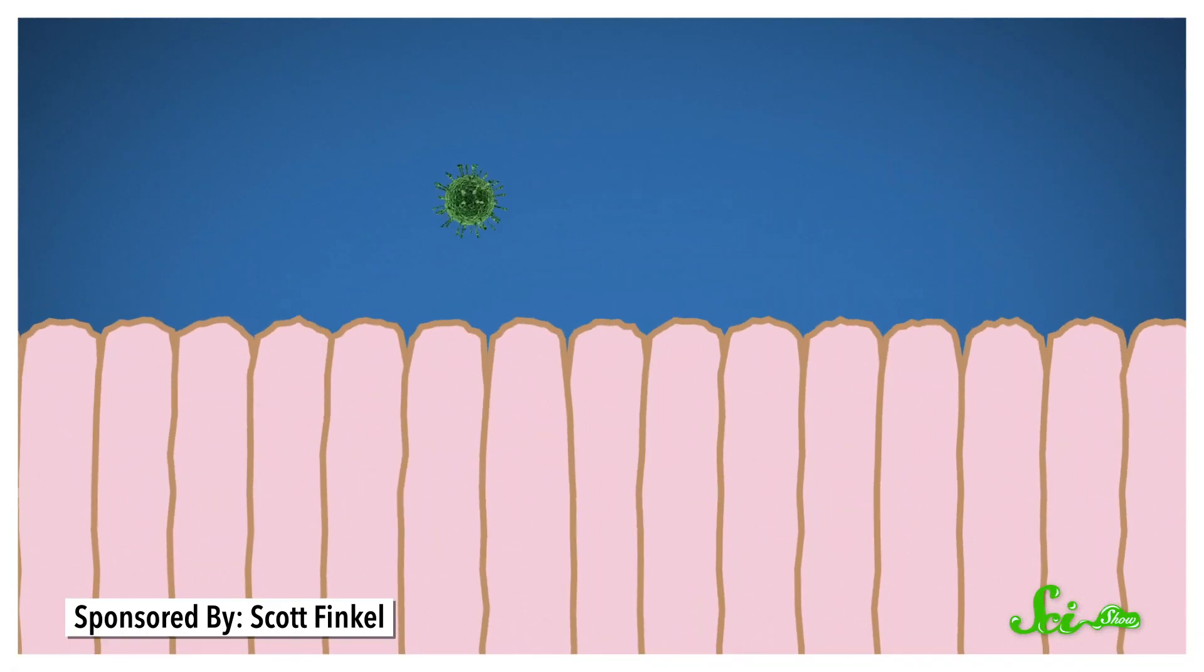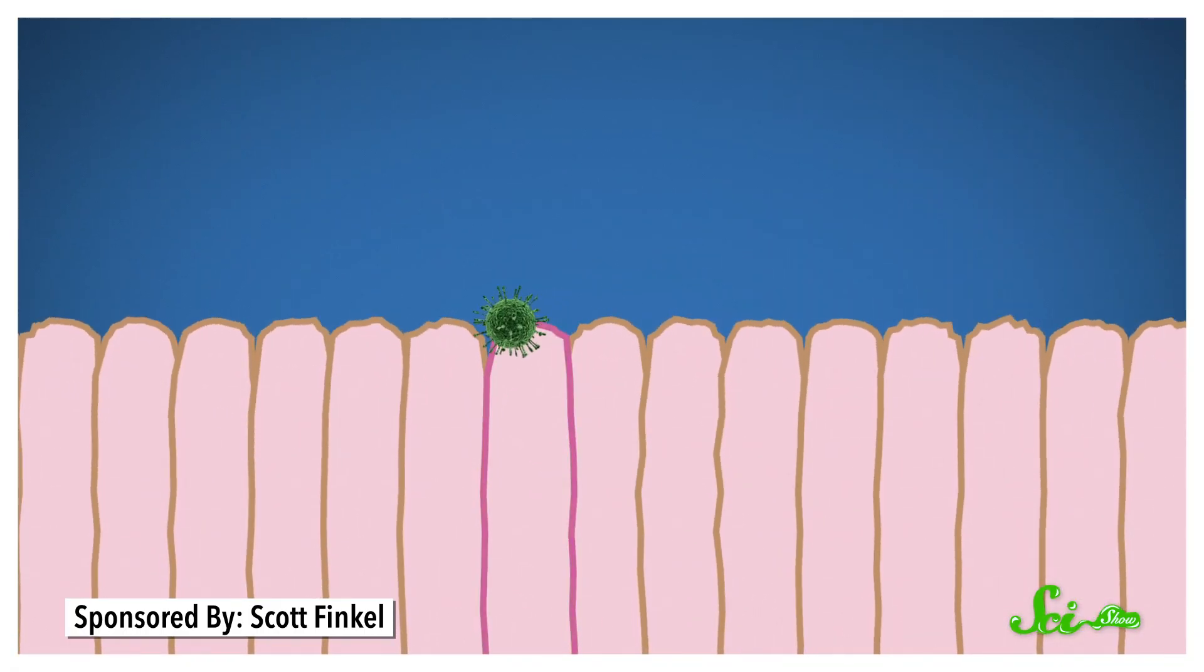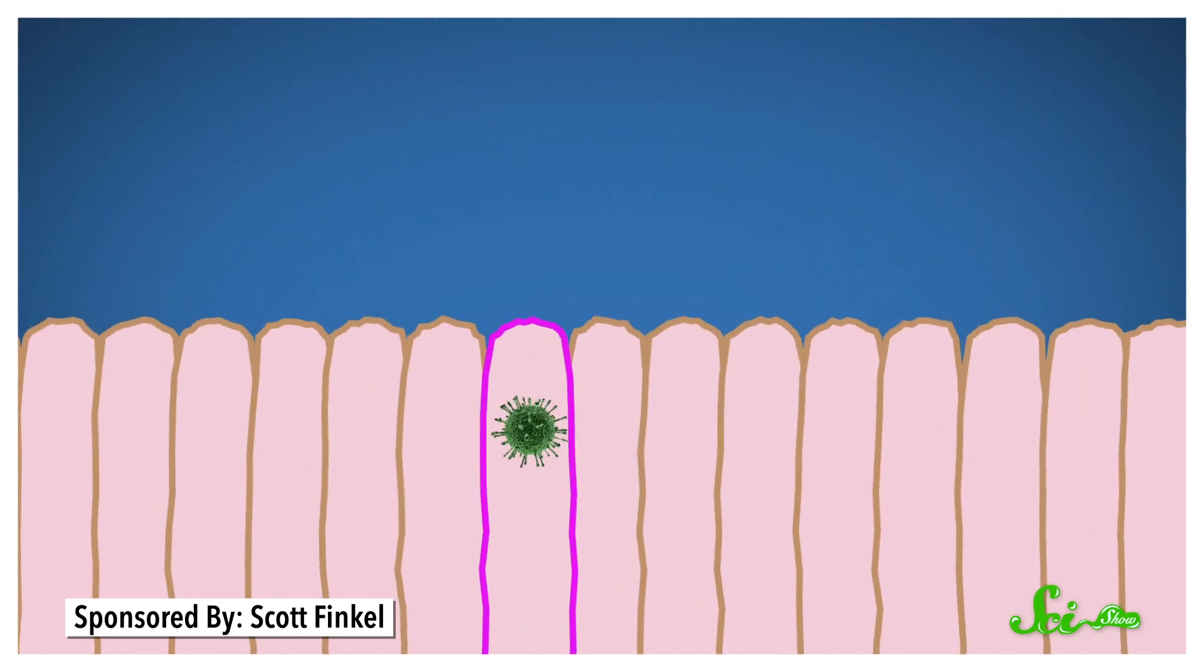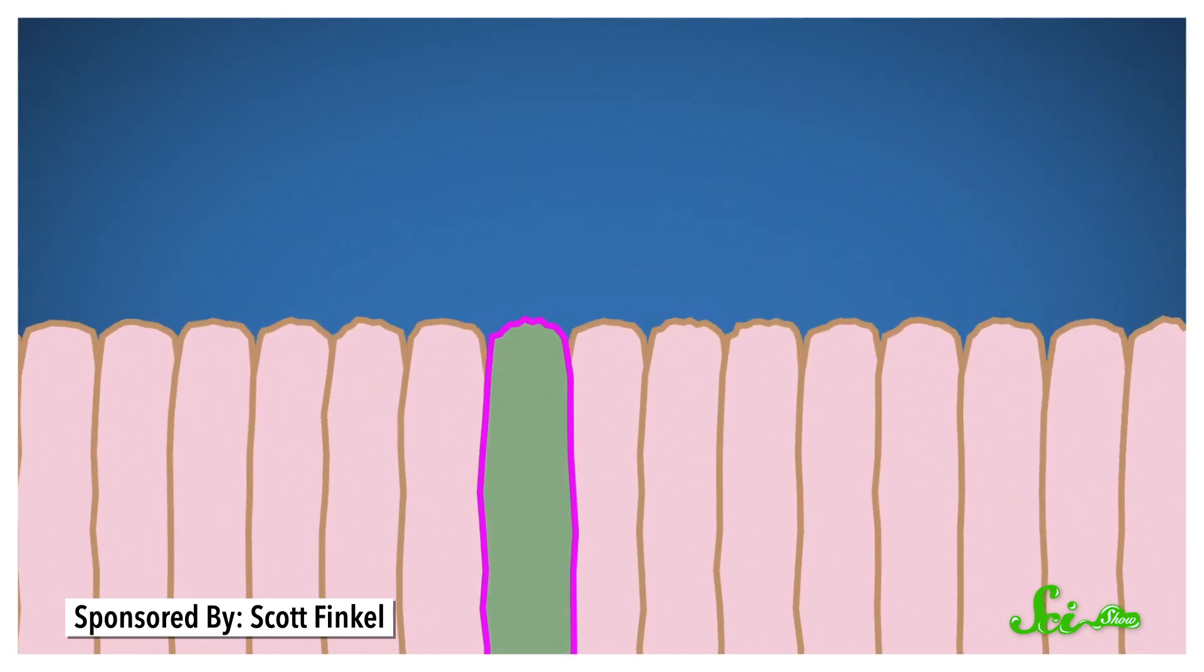And when you eat a norovirus-contaminated salad, it finds plenty of hosts in your gut. When the virus finds an intestinal cell, it tricks membrane receptors to get inside, and then hijacks the cell's machinery to make copies of itself.